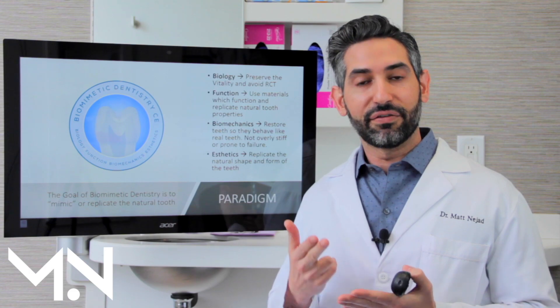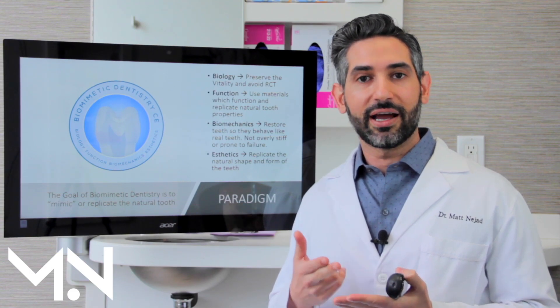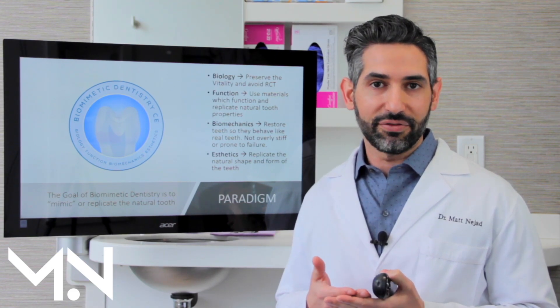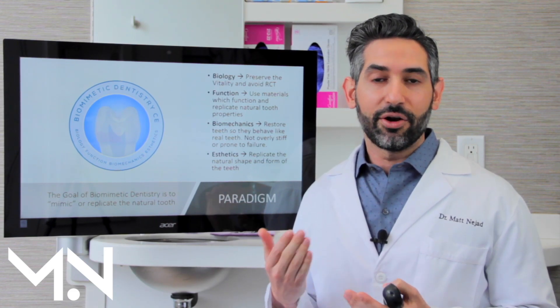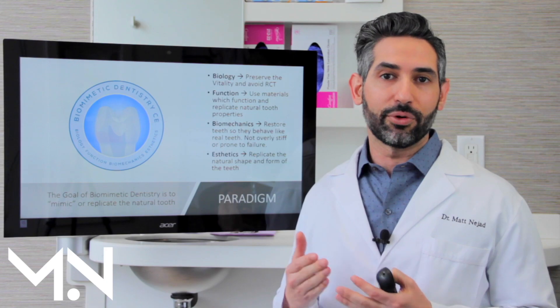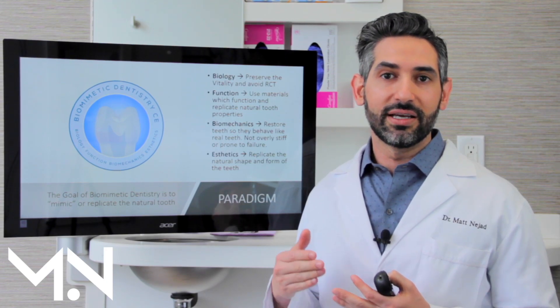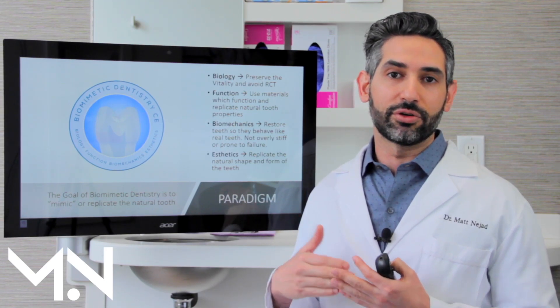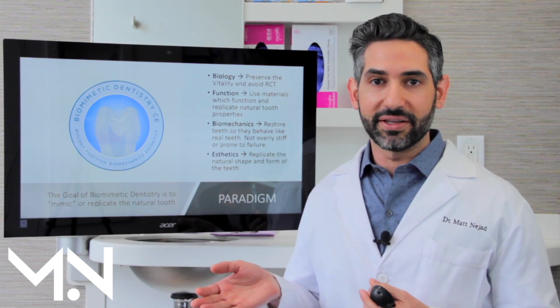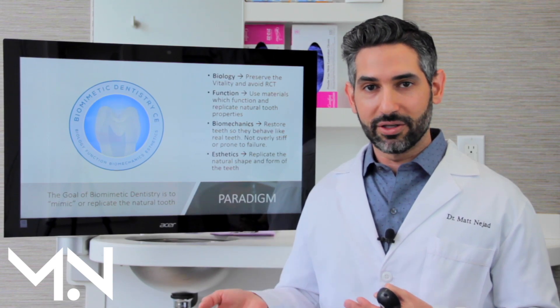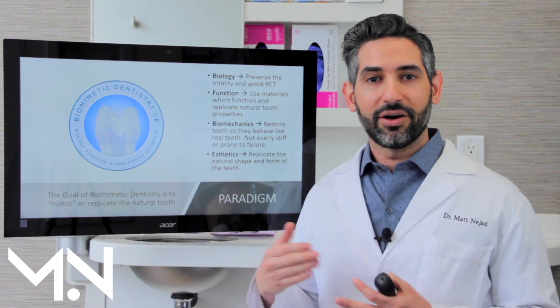The premise includes the strength of the tooth, the function — like how you chew on it and how it bends and flexes. And one of the most important things about biomimetic dentistry is preserving the pulp vitality, which means keeping the tooth alive when it's possible.